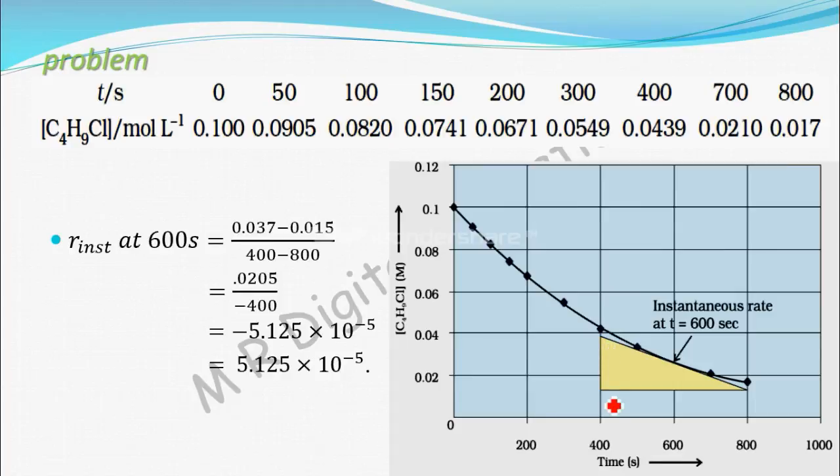This distance is nearly equal to 0.037 minus 0.015. So this distance is (0.037 - 0.015) divided by (400 - 800).